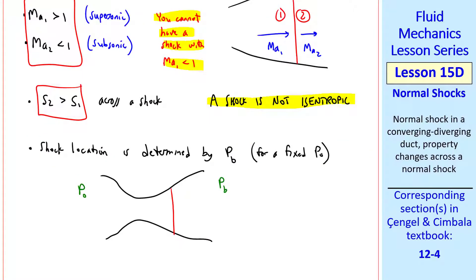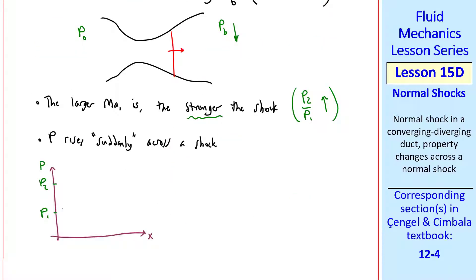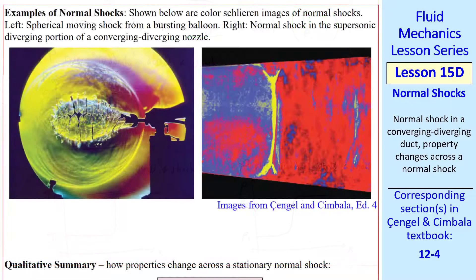If the shock is at some Pb, as Pb goes down, the shock moves to the right. If Pb is small enough, you can eventually have a shock at the exit plane. The larger Mach number one is, the stronger the shock. Since Mach number increases through the supersonic portion of this diverging duct, as the shock moves downstream, it becomes stronger. The pressure ratio across the shock goes up as the shock increases in strength. The pressure rises suddenly across the shock — the shock thickness is only a few microns, so we assume it's a sudden jump. Temperature and density also rise suddenly across the shock.